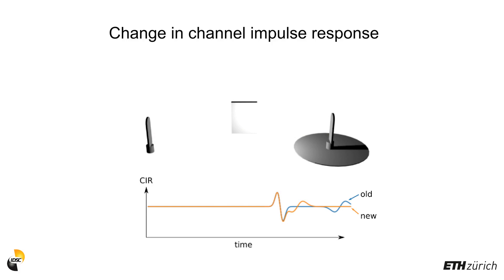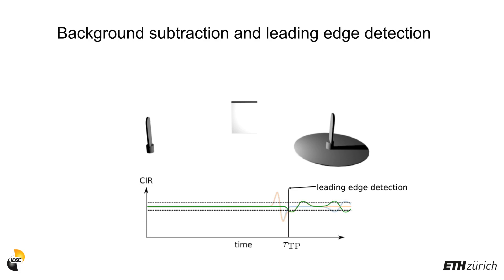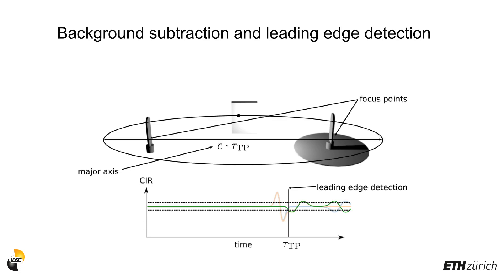By taking the difference of the two measurements and by applying a leading edge detection on it, we can localize the change on an ellipse. This ellipse is defined by the leading edge location within the channel impulse response and the positions of the transmitter and receiver.